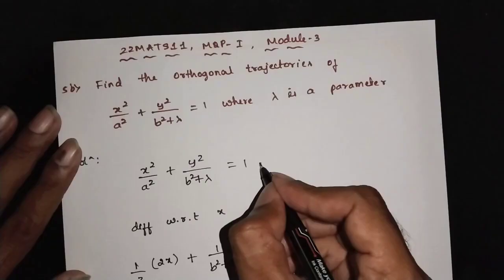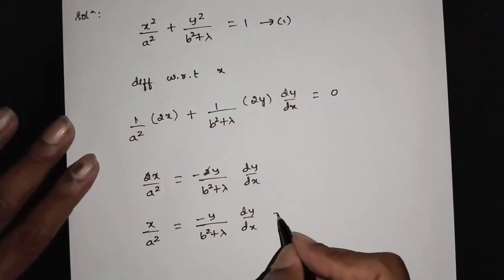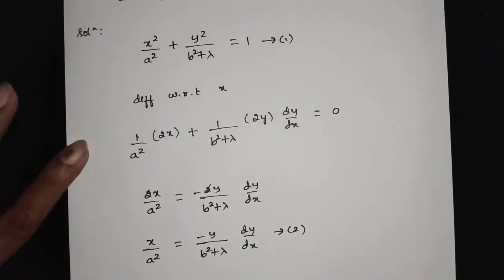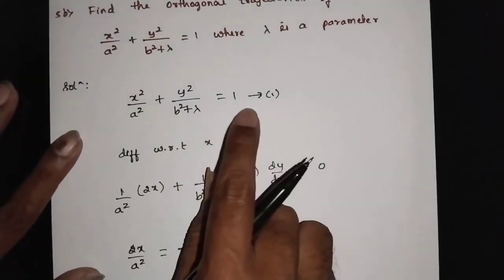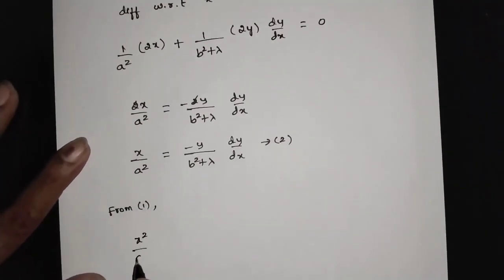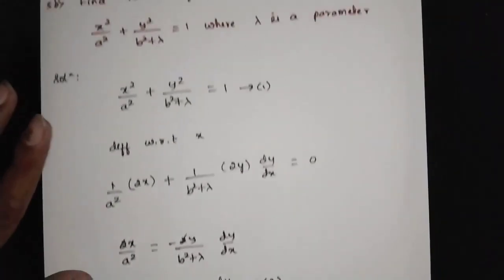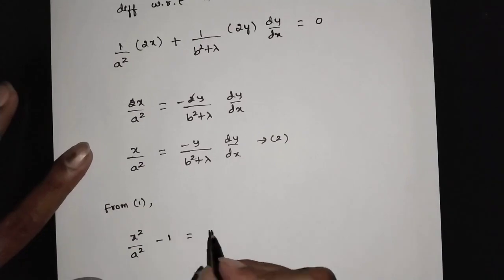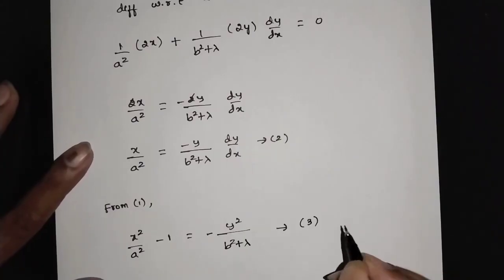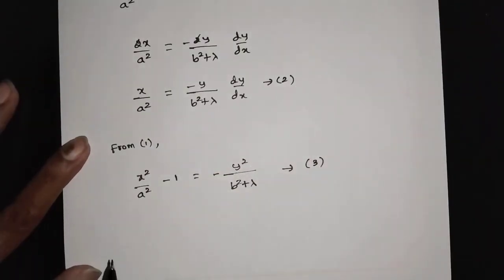This gives equation 2. Now using equation 1, from equation 1 rearranging: x squared by a squared plus 1 minus y squared by b squared plus lambda gives equation 3. Then take equation 2 divided by equation 3.